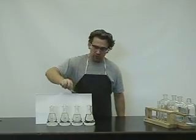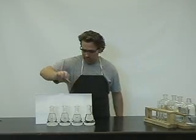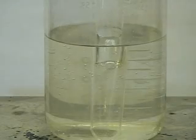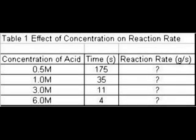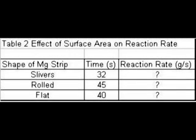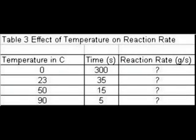The concentrations for these test tubes are 1 molar hydrochloric acid. Each piece of magnesium is one centimeter in length and has a mass of 0.12 grams. Be sure to complete all of the tables and remember your units.